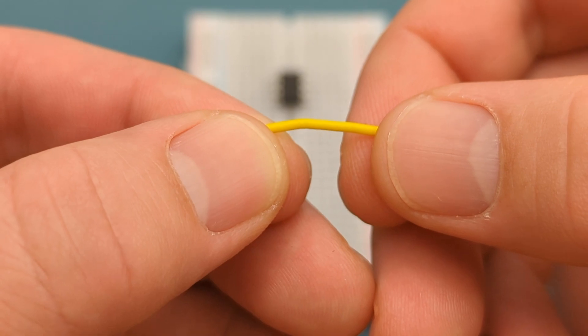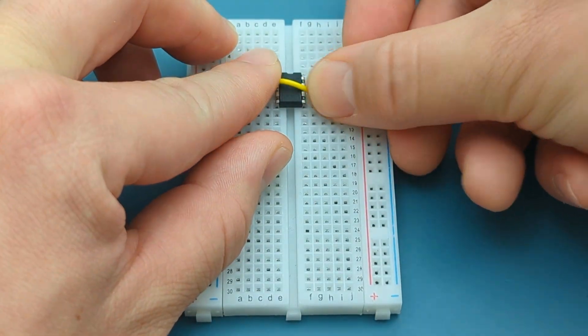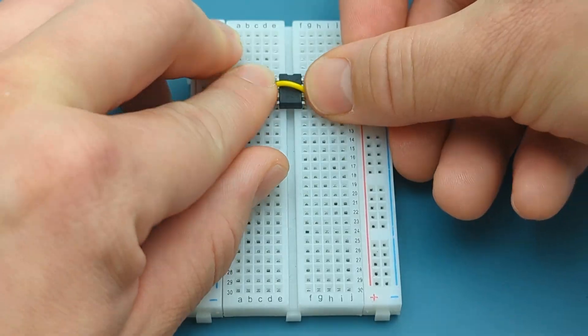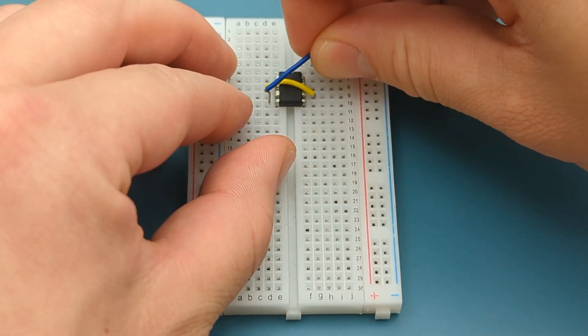Use a jumper wire to connect pin 2 or trigger to pin 6 or threshold. Use a jumper wire to connect pin 4 or reset to pin 8 or VCC.